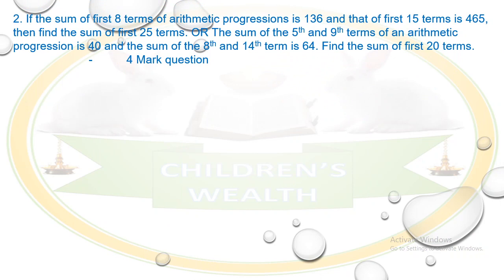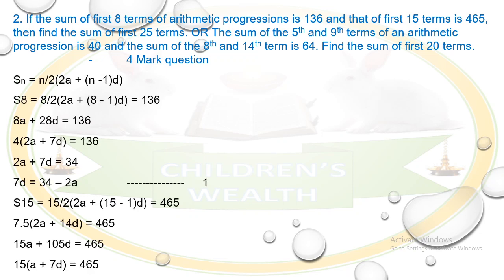Next problem: if the sum of the first 8 terms of an AP is 136 and that of the first 15 terms is 465, find the sum of the first 25 terms. Also: if the sum of the 5th and 9th terms is 40 and the sum of the 8th and 14th terms is 64, find the sum of 20 terms. This is a 4-mark question. From Arithmetic Progressions you can expect around 7 to 10 marks each year.